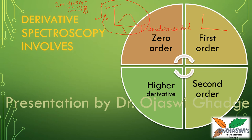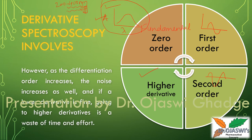We simply click on the software to convert the fundamental spectrum into first-order, then second-order, and higher derivatives such as third and fourth order. However, as the differentiation order increases, the noise also increases. If a lower derivative is sufficient, going to a higher derivative is a waste of time and effort.